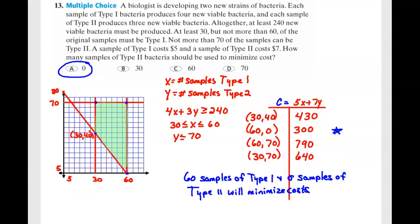Okay, 13. A biologist is developing two new strains of bacteria. Each sample of type 1 produces four new viable bacteria, and each sample of type 2 produces three viable bacteria. Although at least 240 new viable bacteria must be produced.